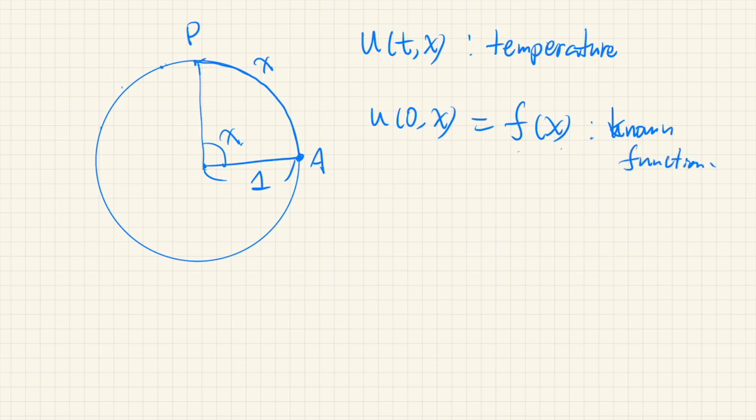And it is known that this distribution of temperature follows the following heat equation, that is gamma, which is a heat capacity per unit length of this wire. So here, partial derivative of u with respect to time, this is proportional to the second derivative of u with respect to x,